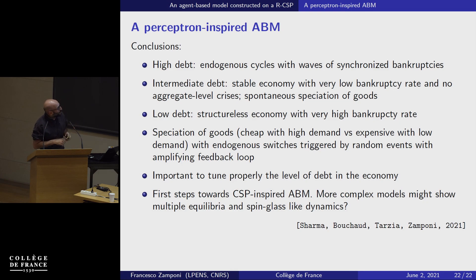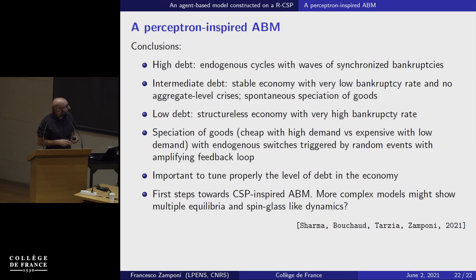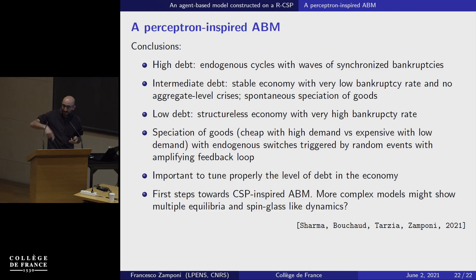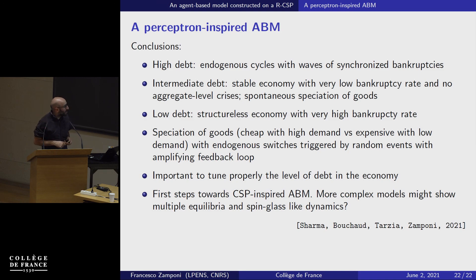When sigma increases further, eventually everyone goes bankrupt — a trivial phase. For the moment, we were not able to implement multiple equilibria in this model, but we hope this can be done in the future. What I think is interesting is that the model highlights the importance of tuning the level of debt in the economy: too strict and everybody goes bankrupt; too loose and you get intermittent crises. This is similar to what was mentioned in the previous talk. If you have ideas to go beyond this, we are happy to talk. Thank you.